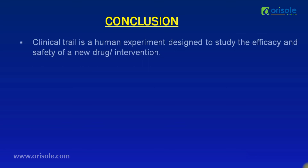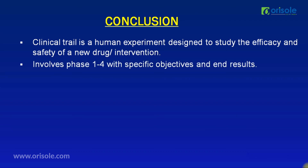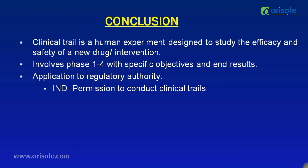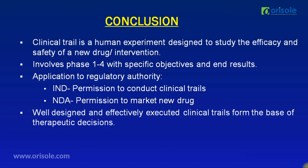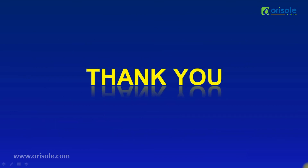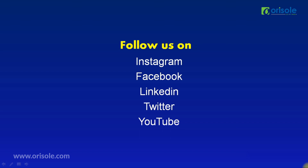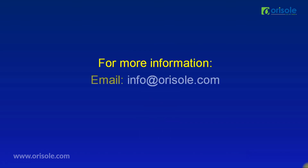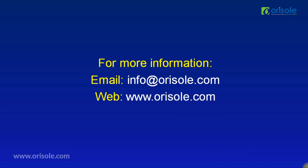Let us conclude the session. A clinical trial is a human experiment designed to study the efficacy and safety of a new drug or intervention. Clinical trial phases — phase 1 to phase 4 — involve specific objectives, with applications to regulatory authorities including the Investigational New Drug (IND) application for permission to conduct trials, and the New Drug Application (NDA) for permission to market the drug. Well-designed and effectively executed clinical trials form the base of therapeutic decisions, and must follow guidelines and protocols to ensure participant well-being. Thank you for watching.